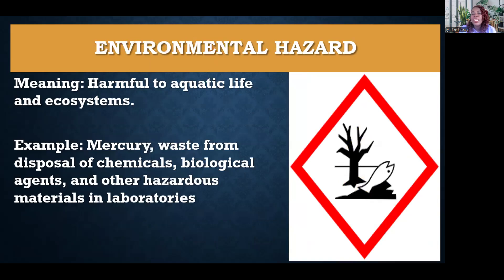The next one is environmental hazard. A lot of waste you produce in the lab would harm the environment if released carelessly. If you see this sign, it means that the substances there are harmful to aquatic life and ecosystems, and you should know how to dispose of them — follow the SOPs. Examples include mercury, waste from disposal of chemicals, biological agents, and other hazardous materials in the laboratory.